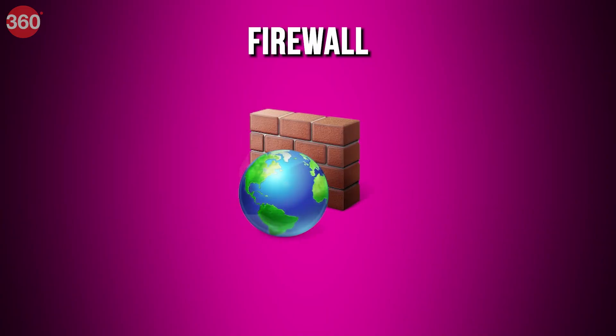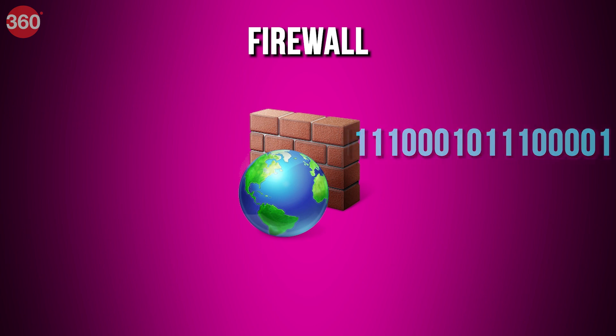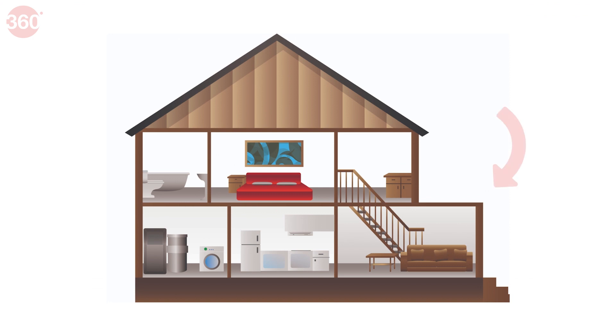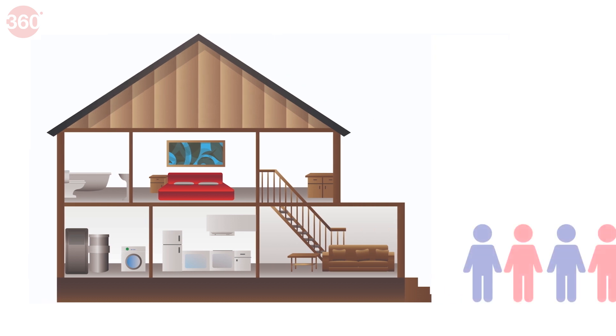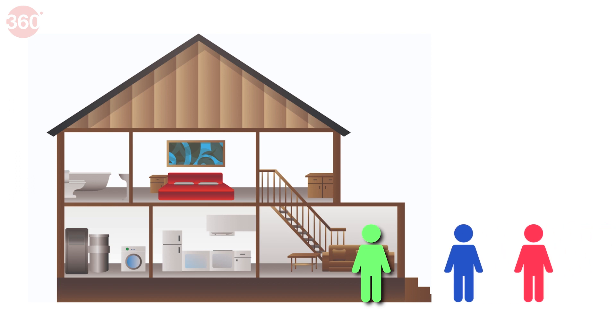Before we move to the conclusion, I also want to talk about firewalls, which are crucial to understanding internet security. Firewalls carefully analyze incoming traffic based on pre-established rules and filter traffic coming from unsecured or suspicious sources to prevent attacks. They use IP addresses and port numbers — think of IP addresses as houses and port numbers as rooms within the house. Only trusted source traffic is allowed to enter the house, and it's further filtered to only access certain rooms.